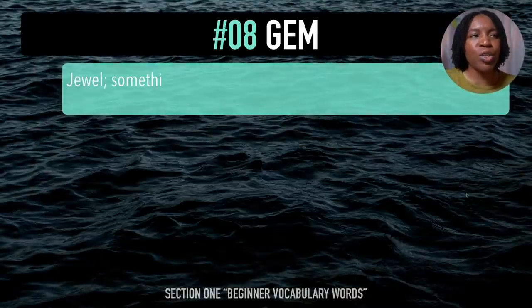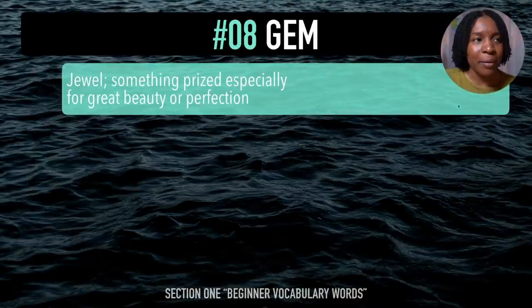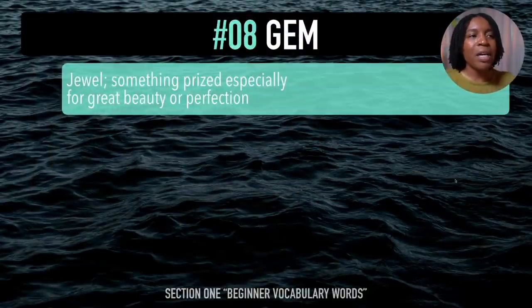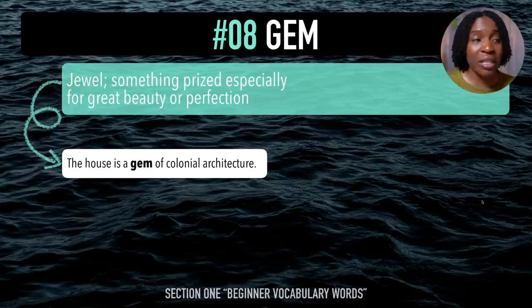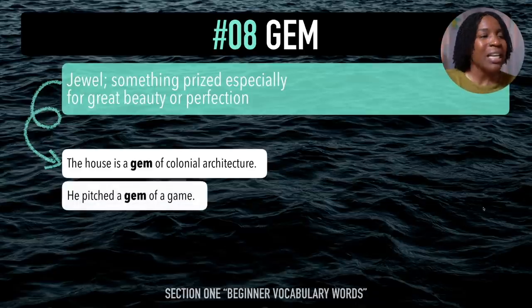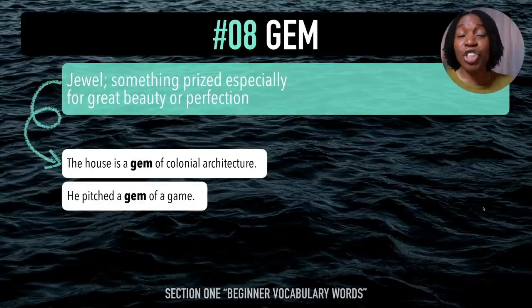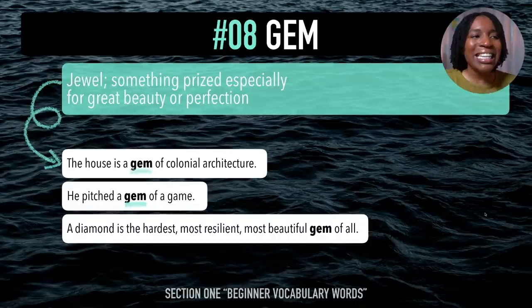The eighth beginner vocabulary word is 'gem'. After me — gem. A gem is a jewel or something prized, especially for great beauty or perfection. Example sentences: The house is a gem of colonial architecture. He pitched a gem of a game. A diamond is the hardest, most resilient, most beautiful gem of all. Last time — gem.